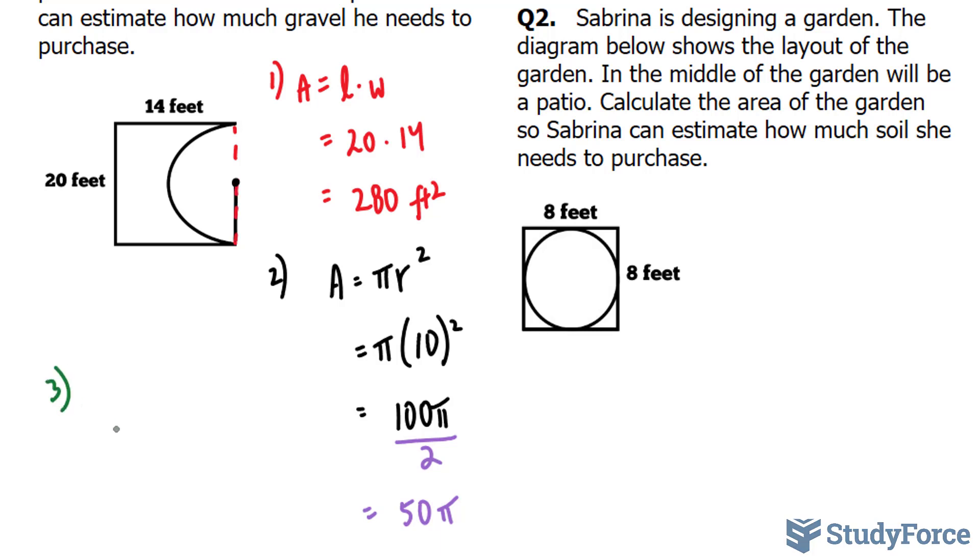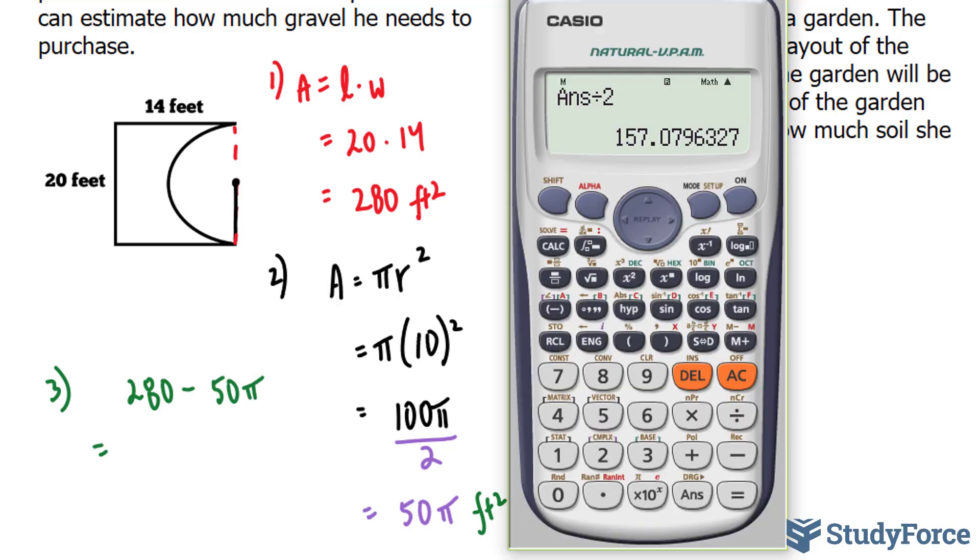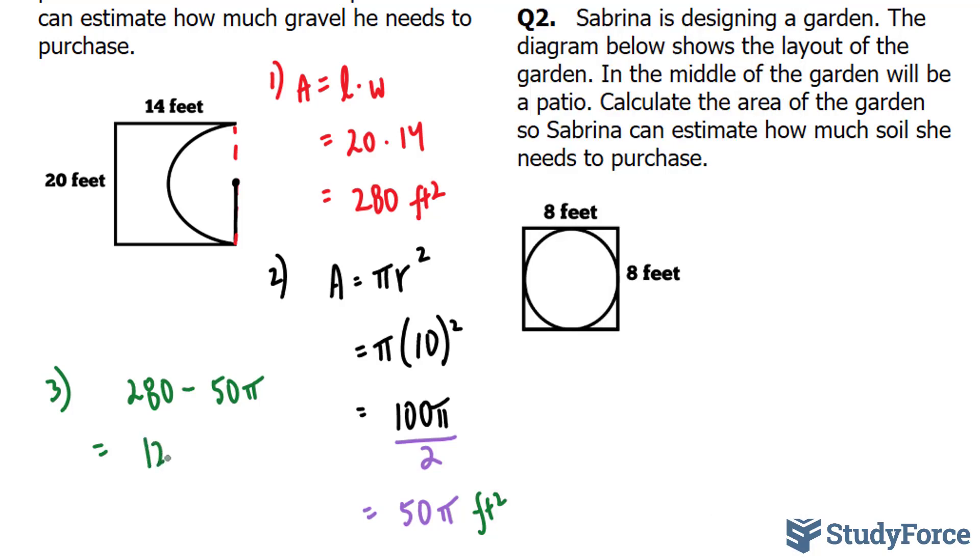My last step, step 3, is to subtract the two areas. You want to subtract the big area from the smaller area. So we have 280 feet squared minus, and by the way, this is also feet squared, so I'm going to write that in. Minus 50 pi, using our calculator once more. 280 minus 50 times pi gives me 122.92, 122.92 feet squared. So what is highlighted here is 122.92 feet squared.